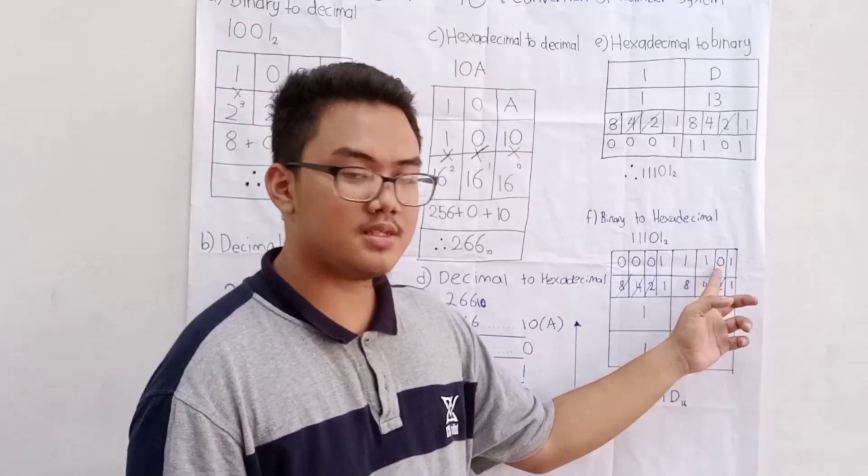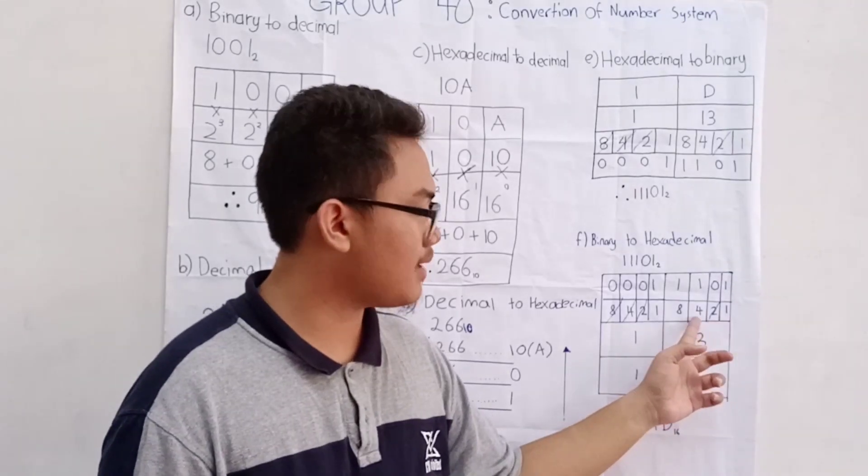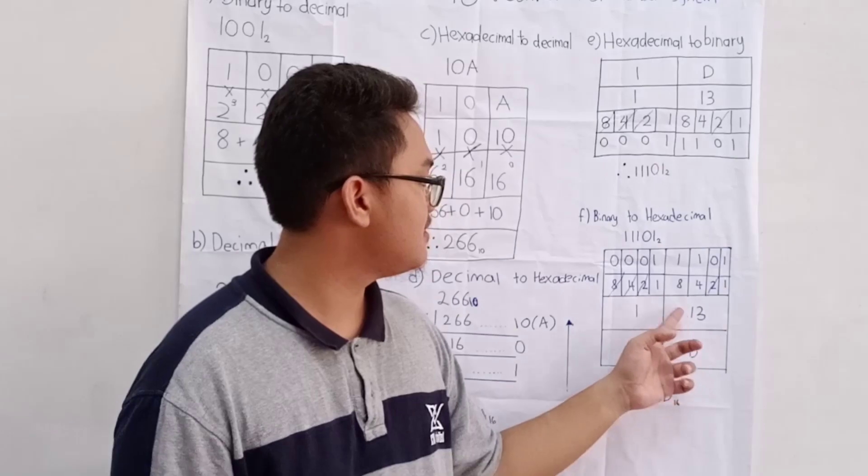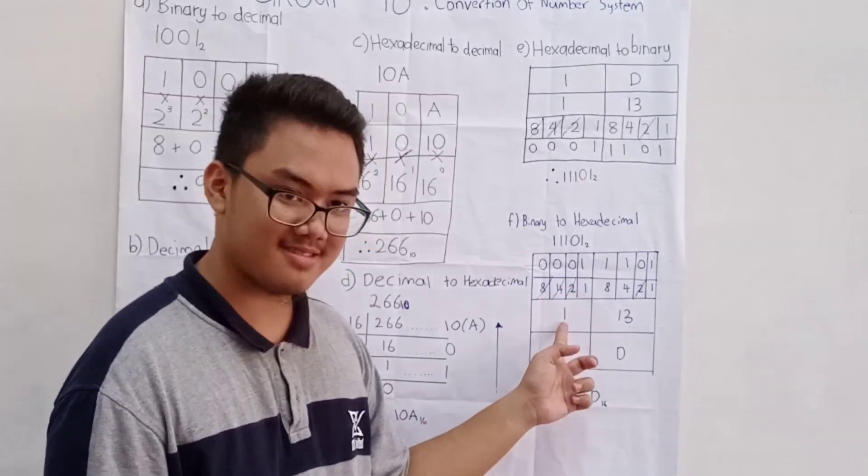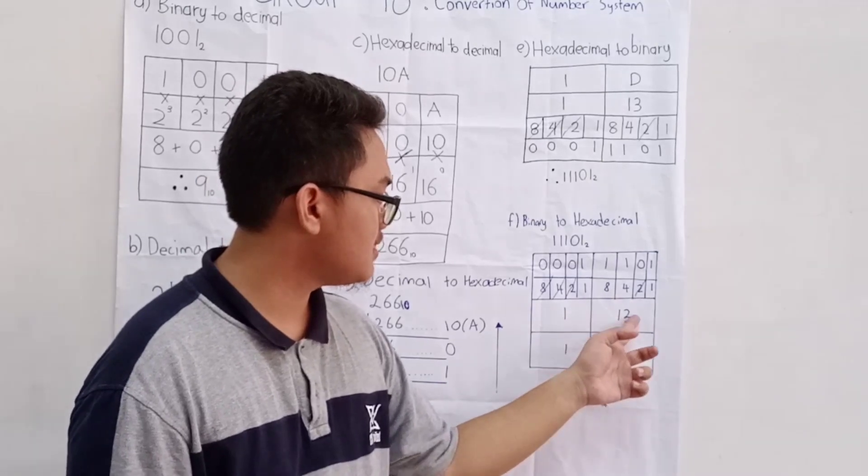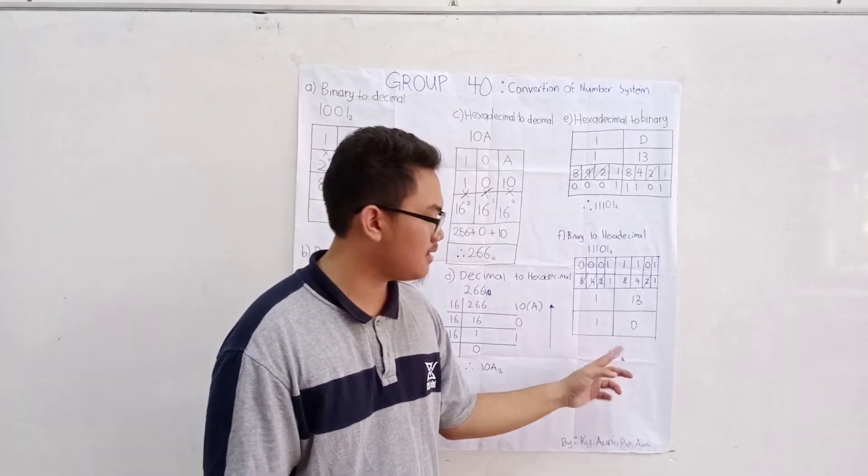If you see 0 below the numbers, you cut it. So, 1 plus 4 plus 8 is 13. The answer is 1. So, next, we convert 13 to D. The answer is 1D base 16.